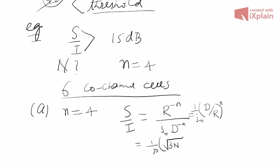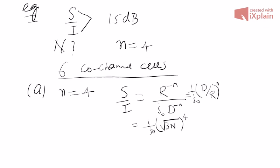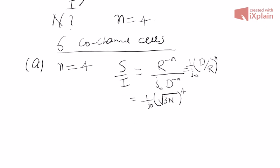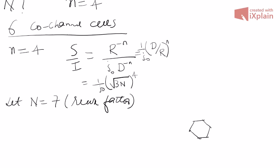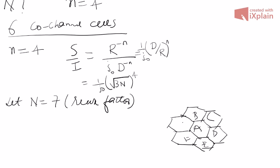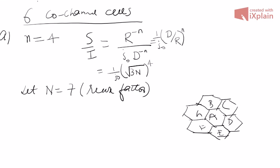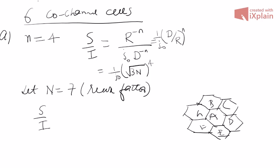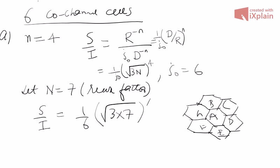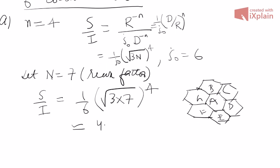We will use hit-and-trial. Let's try the reuse factor N = 7. N = 7 means the classic cluster pattern from the first cellular systems class — cells A, B, C, D, E, F, G all use different frequencies, then we repeat. This is the N = 7 cluster size.